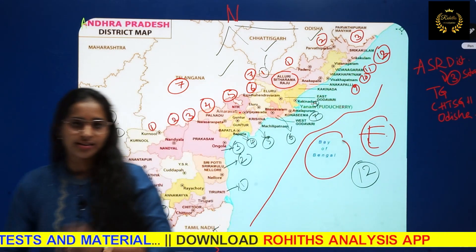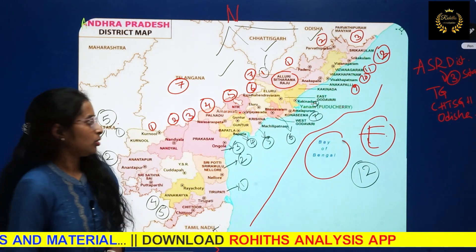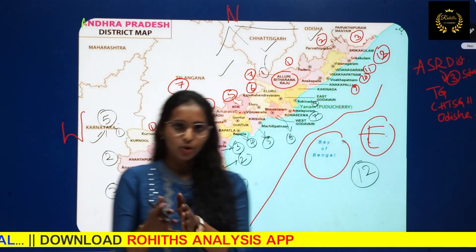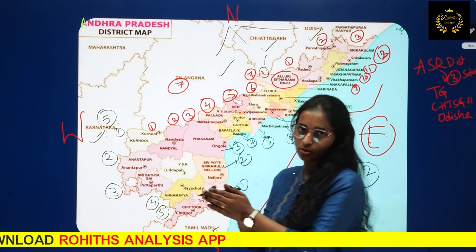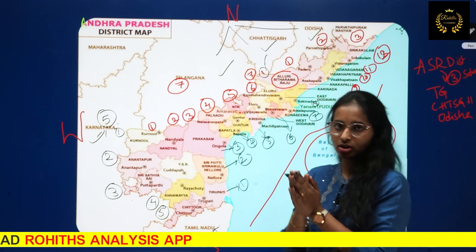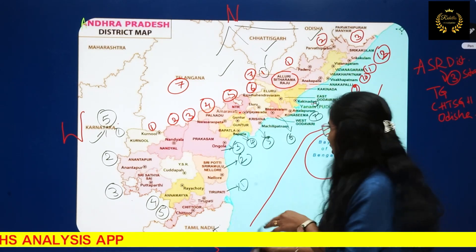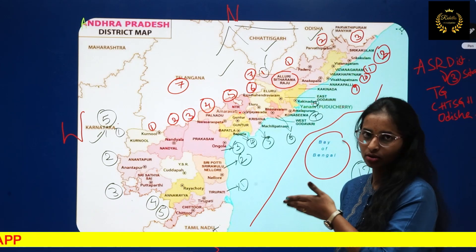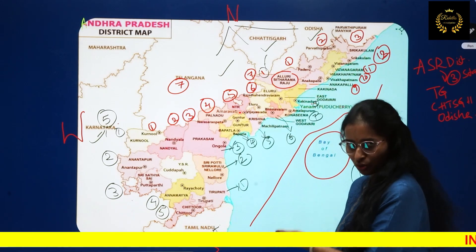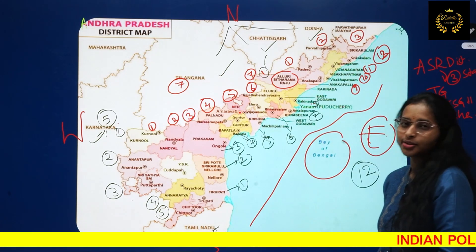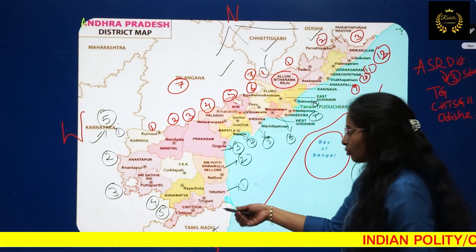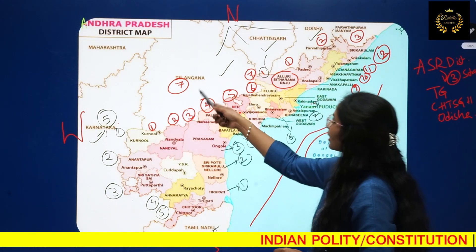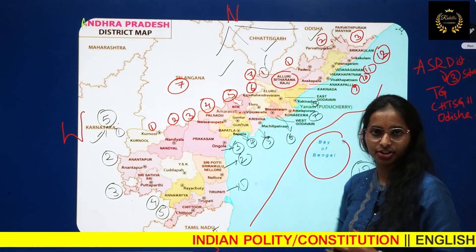Land borders refer to where a state shares border with another state. Coastal border means the border shared with water — the ocean. So the land border of Andhra Pradesh is shared with Karnataka, Telangana, Chhattisgarh, and Odisha.